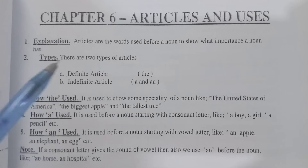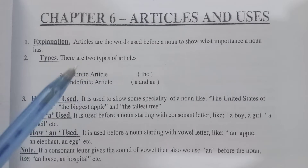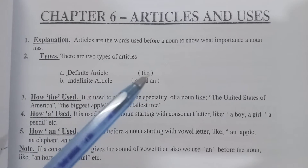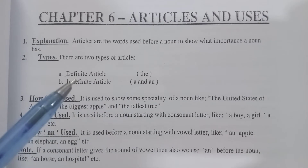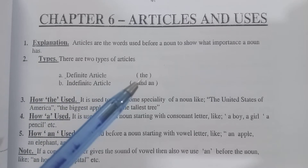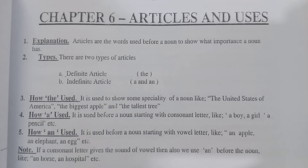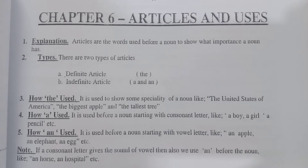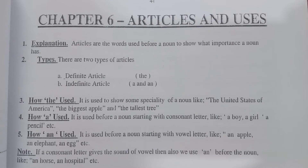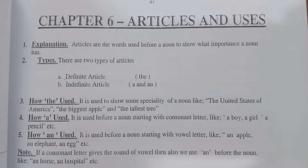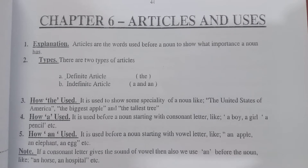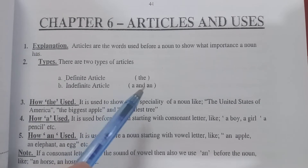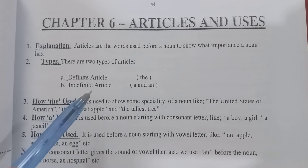There are two types of articles. The first type is the definite article, which is 'the.' The second type is the indefinite article, which includes 'a' and 'an.' So, 'the' is called the definite article, while 'a' and 'an' are called the indefinite article.